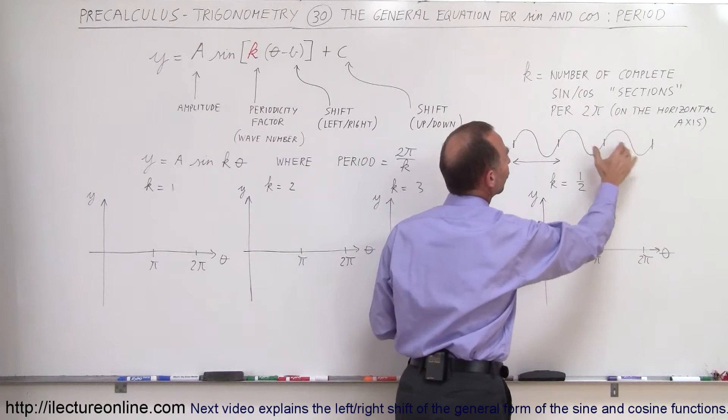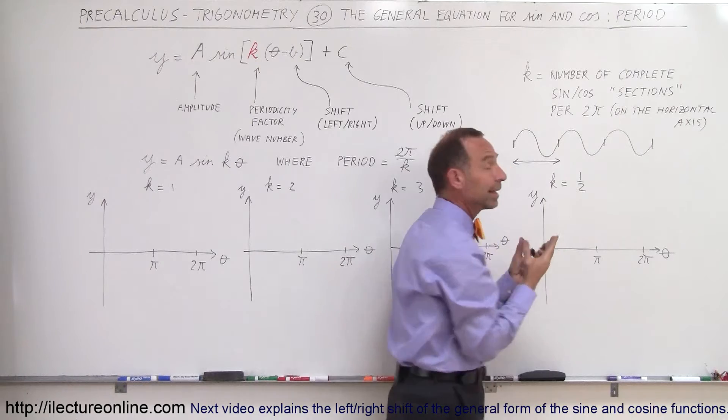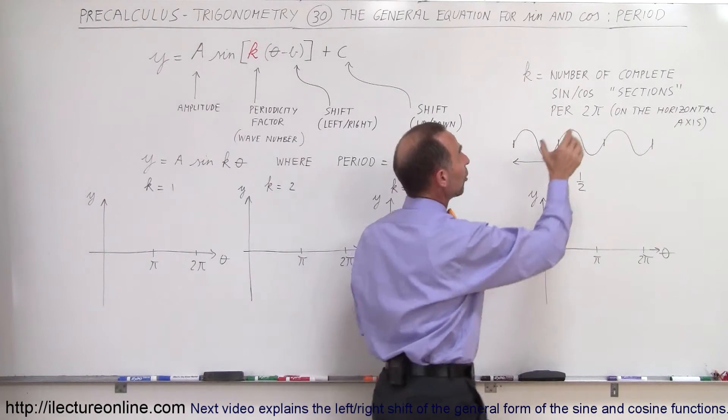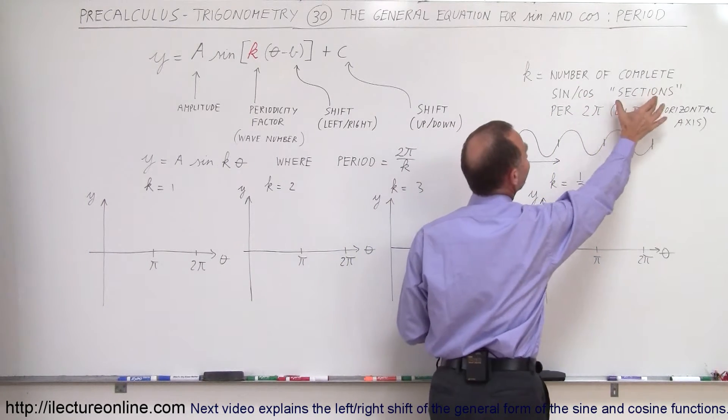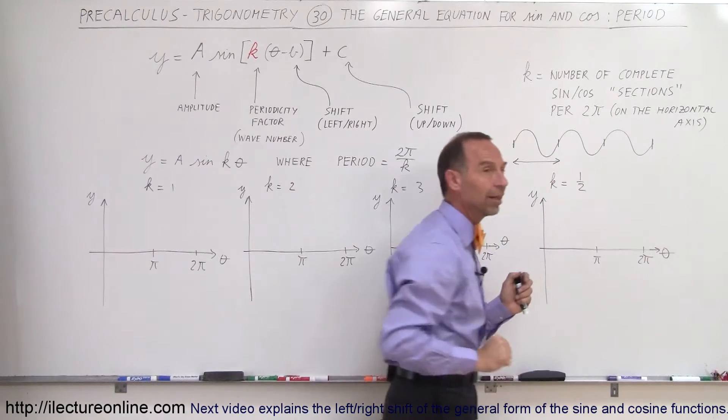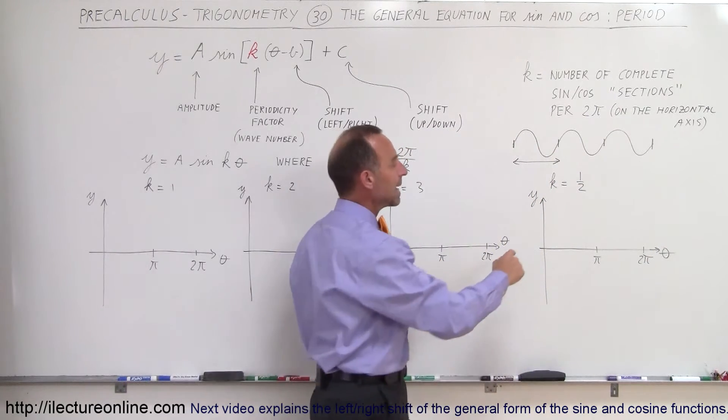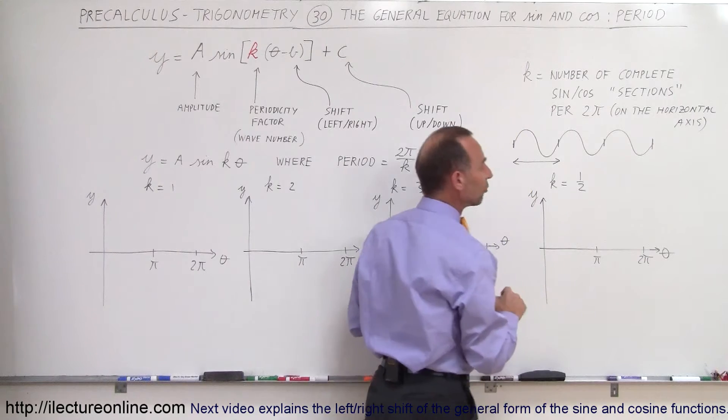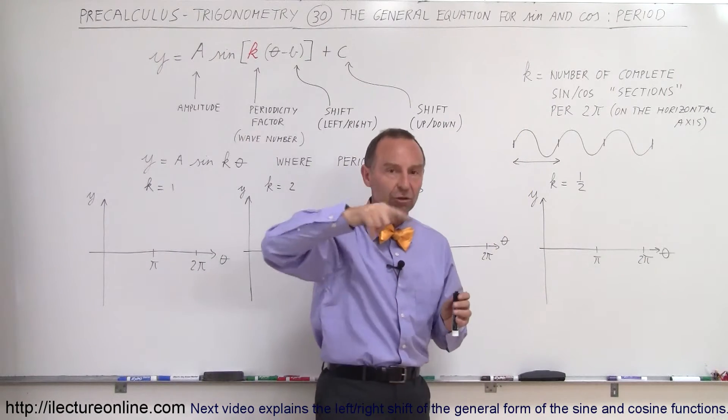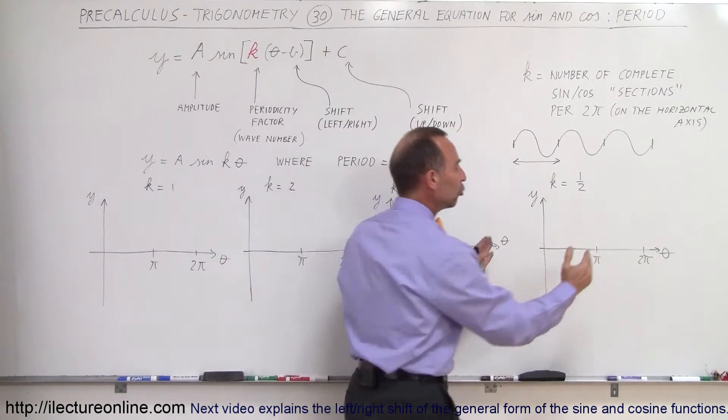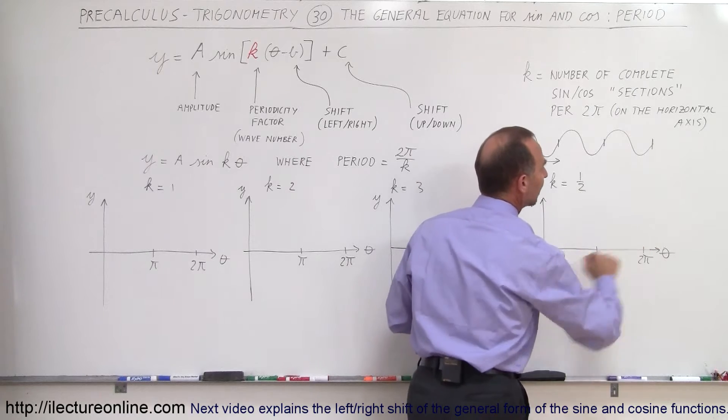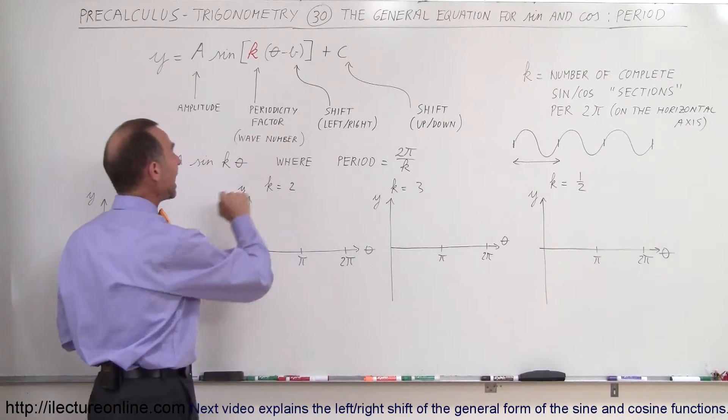So it's the number of waves, or what I like to call here in trigonometry, the number of sine or cosine sections per 2π on the horizontal axis. So 2π would be the angular distance in radians. How many times does a sine function go up and down like that in a 2π section on the horizontal axis? That depends on the k.